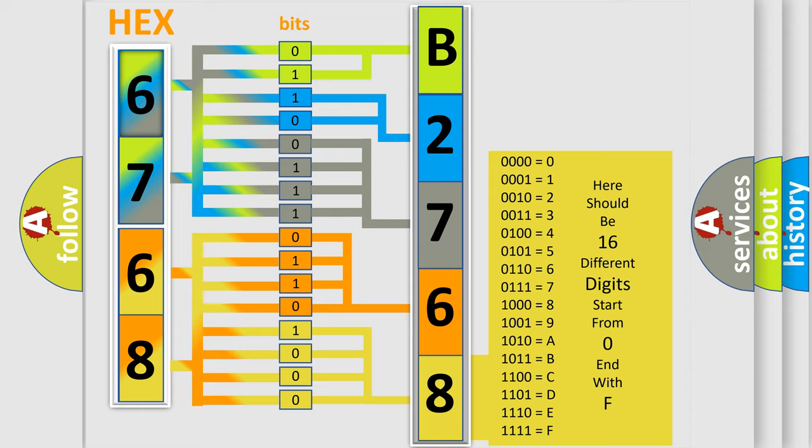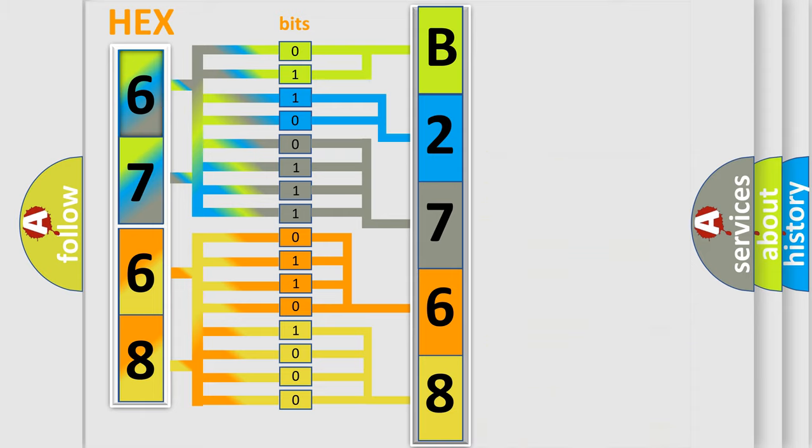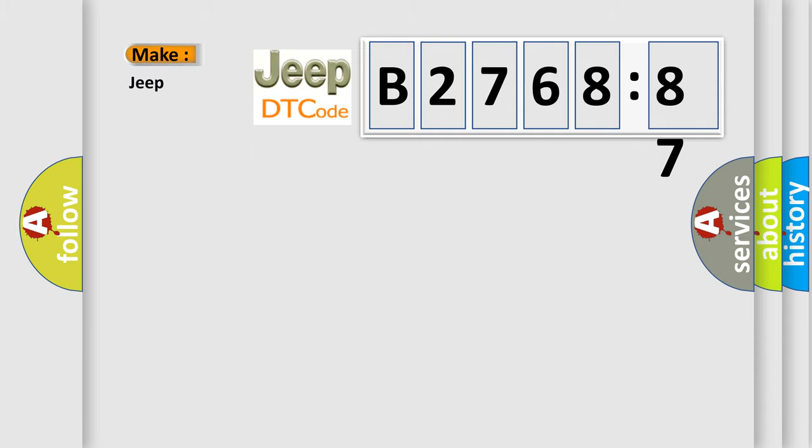A single byte conceals 256 possible combinations. We now know in what way the diagnostic tool translates the received information into a more comprehensible format.